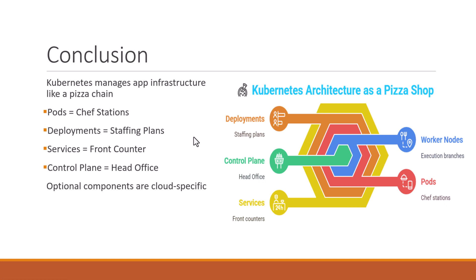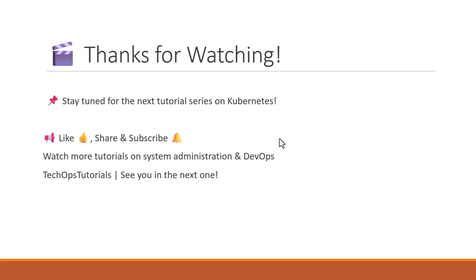And that's the big picture of Kubernetes architecture. We saw how everything from the control plane to pods fits into a real-world pizza shop model. I hope this analogy helped make it easier to understand. If you found this video helpful, don't forget to like, subscribe, and hit the bell icon. Thanks for watching — see you in the next one.